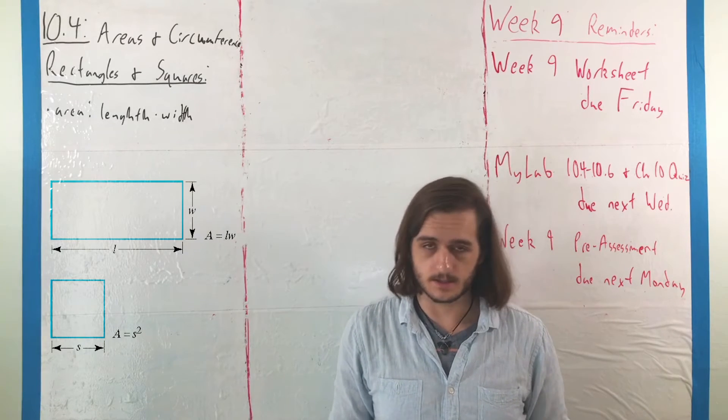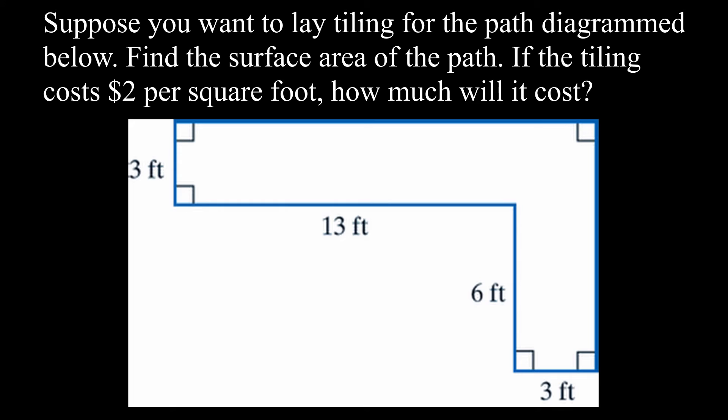What we want to do is look at finding the surface area of the path diagram below so that we can figure out how much it will cost to tile it, assuming tiling is $2 per square foot.